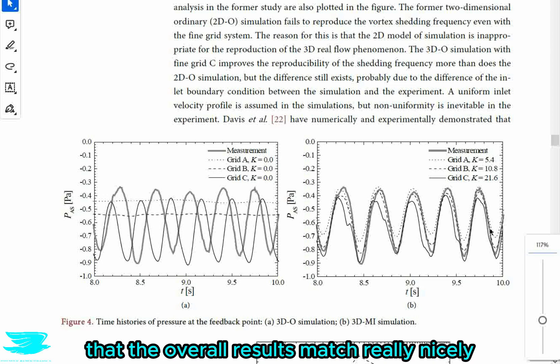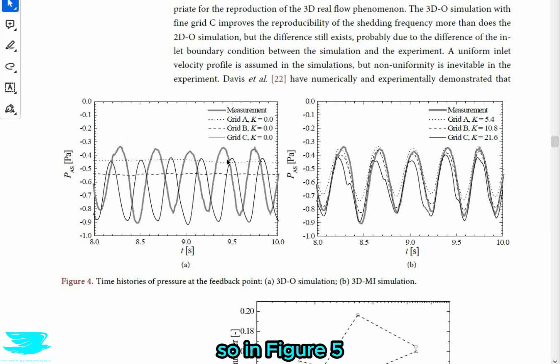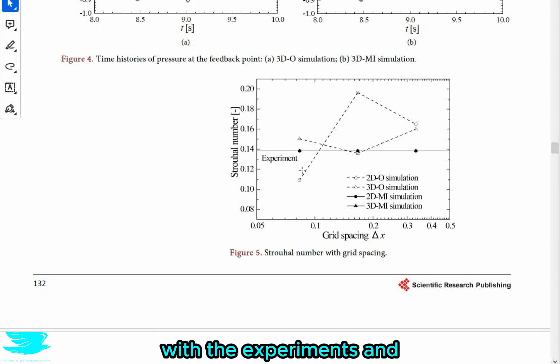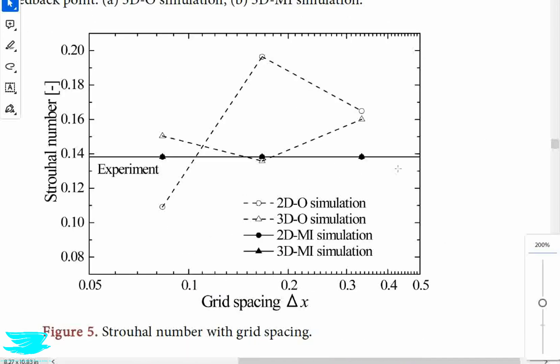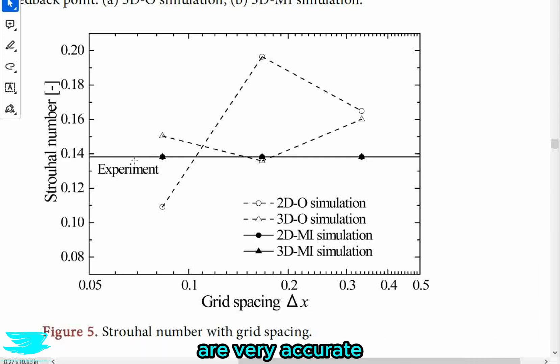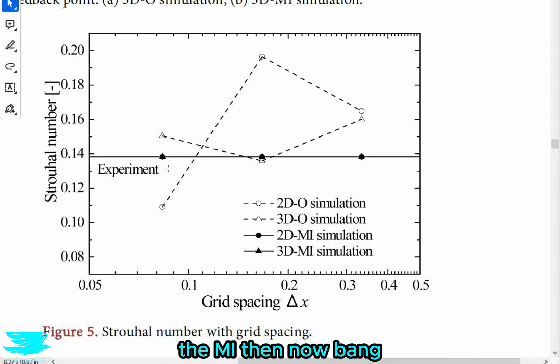So let's go further and look at the results more. We can see here that the overall results match really nicely for the CFD MI. Let's go further. So in figure five, we see the Strouhal number for these various CFD runs with the experiments, and we see the 2D and 3D cases. I'll zoom in a little bit here as well. So for both the 2D and 3D cases, it is clear that the measurements integrated CFD go from not very accurate. I mean, if there's no measurement integration, there's like a 20% difference to what it should be. And then with the measurement integration, the MI, they're now bang on the Strouhal number compared to the experiments. That's huge.